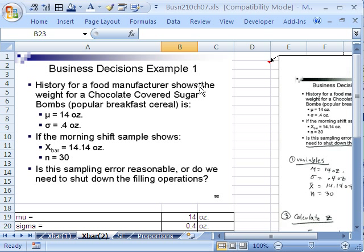One more. We're talking x-bars and how to use the central limit theorem and all this stuff. History for a food manufacturer shows that the weight for chocolate-covered sugar bombs, a popular breakfast cereal, mu is 14, the sigma population standard deviation is 0.4 ounces. These are the numbers from population data. If the morning shift shows 14.14 ounces and the sample size was 30, the question is, is the sampling error, which is 0.14, reasonable?